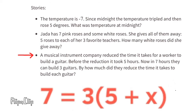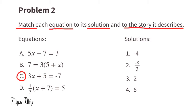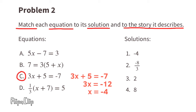Equation c: 3x plus 5 equals negative 7. First, we subtract 5 from both sides, leaving us with 3x equals negative 12. Finally, we divide both sides by 3, giving us x equals negative 4.